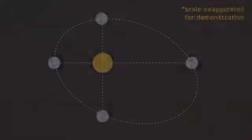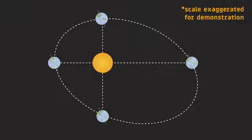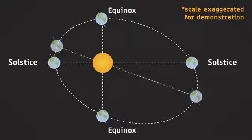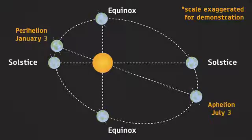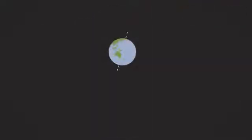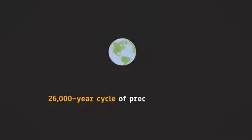Note that solstices are not the position when Earth is closest or farthest from the Sun. In fact, Earth is closest to the Sun in January. Also, the axial tilt, which is constant throughout a year, does change over long periods of time.